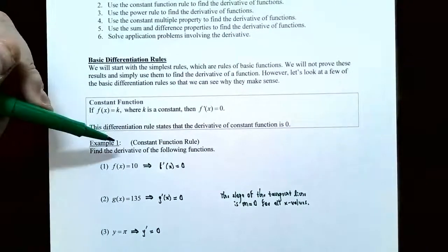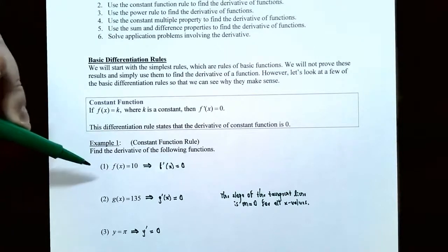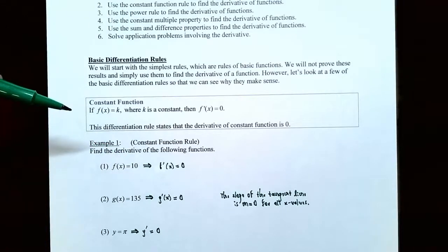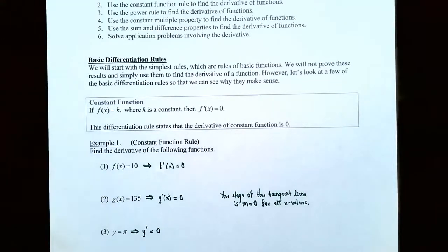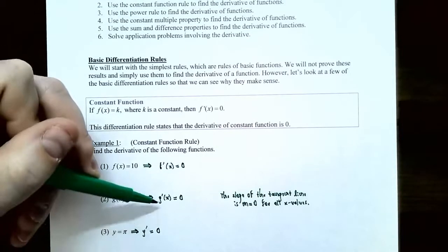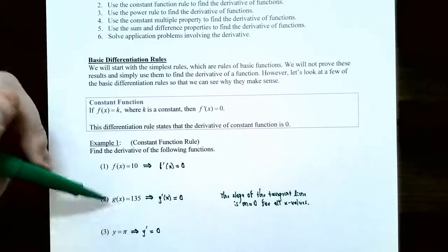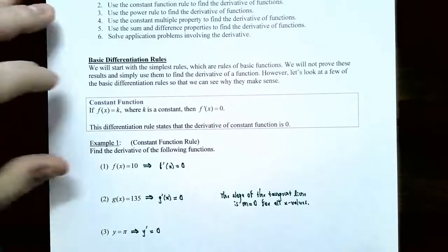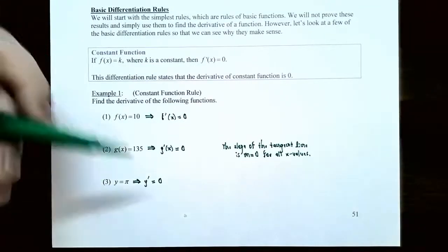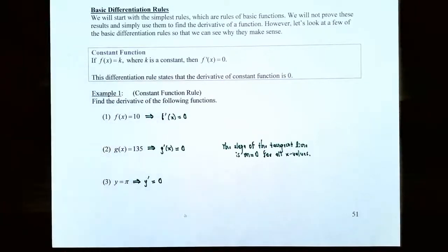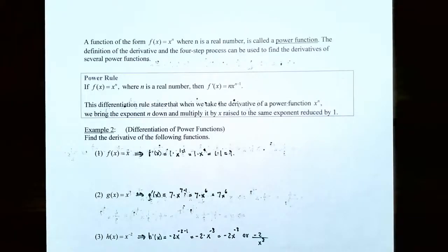Example one, constant function rule: find the derivative of the following functions. Number one, f of x equals 10. Notice that 10 is just a real number or a constant, so f prime of x is zero. Number two, if you have g of x equals 135, it doesn't matter how large the number is, it's still just a constant, so g prime of x is equal to zero. Note if the function is called g, then the derivative will be g prime of x. Number three, y equals pi — pi is just a number, approximately 3.14, so y prime is zero. If the derivative is zero no matter what the x value is, that means the slope of the tangent line is zero for all x values.